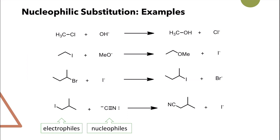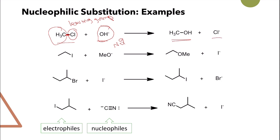Some examples of nucleophilic substitution: a reaction between methyl chloride and hydroxyl ion — the hydroxyl group is the nucleophile with a negative charge, and the C–Cl bond is the one that will be broken, so chloride is the leaving group and this carbon is the electrophile. You will end up with methanol and chloride. For ethyl iodide with methoxide ion, again this is the electrophile, iodide is the leaving group, and methoxide is the nucleophile — you will end up with an ether and iodide.